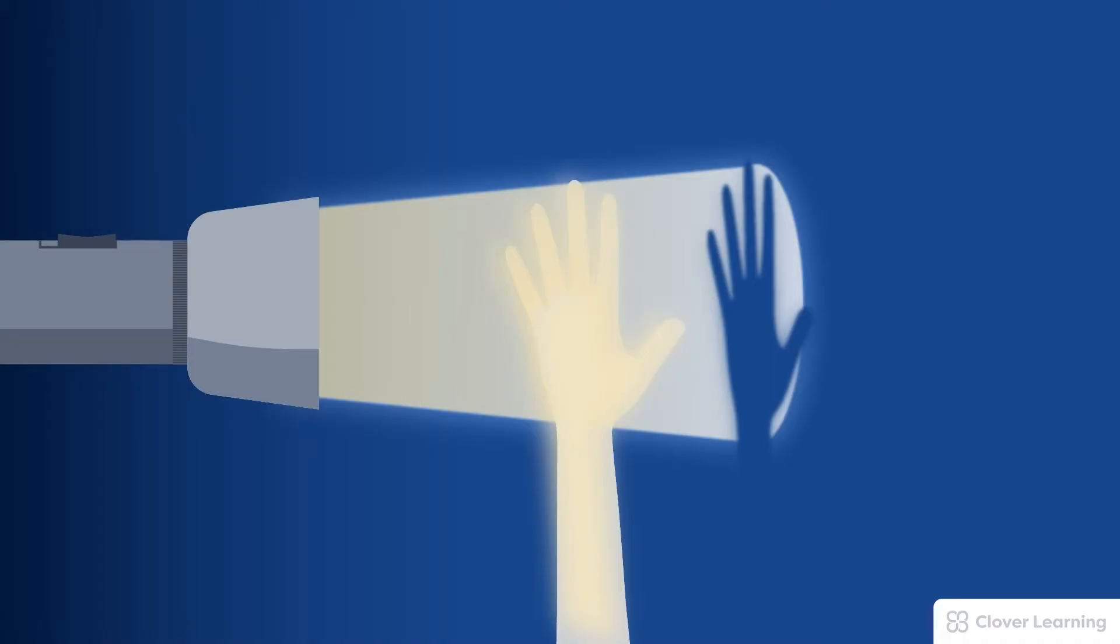Compare this process to how you can use a flashlight to make a shadow of your hand. Some of the light is absorbed by your hand, and some of the light transmits past your hand. The combination of absorption and transmission is what creates that nice high contrast shadow of your hand.